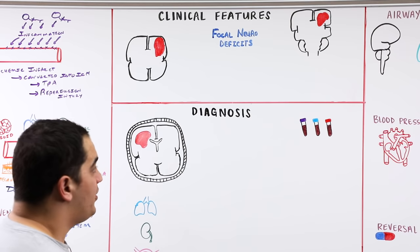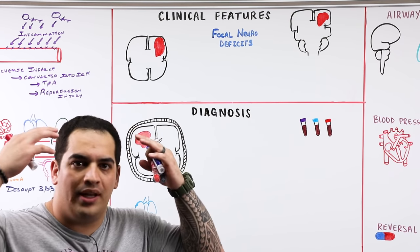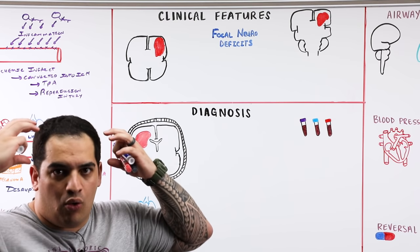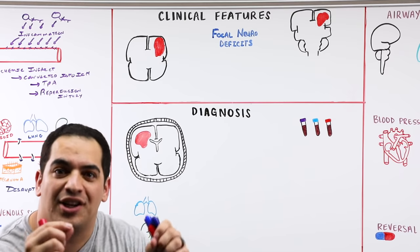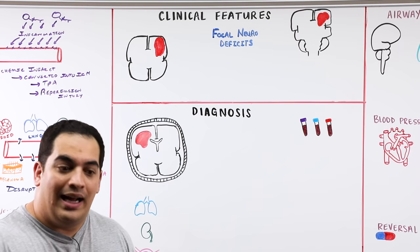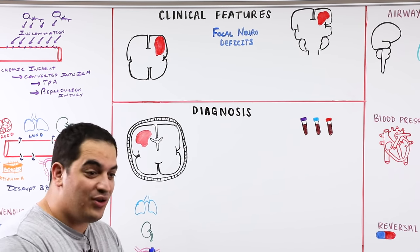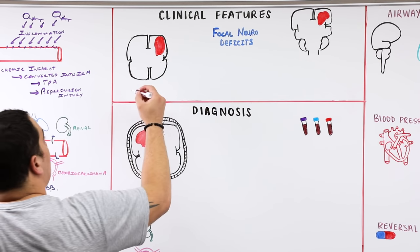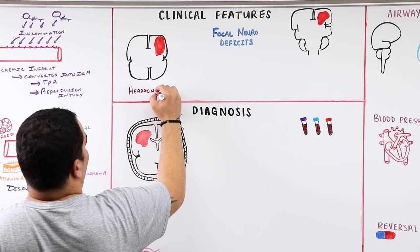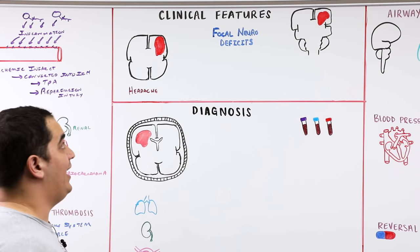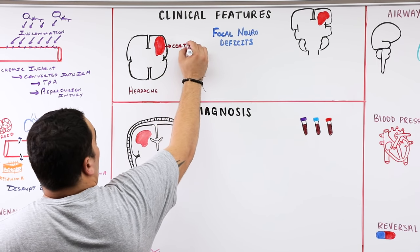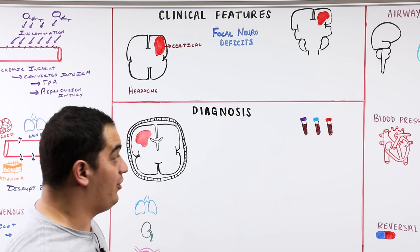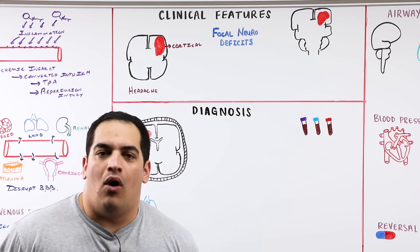Moving on to clinical features: headache is a common symptom, especially with cortical or lobar bleeds, because the bleed is close to the meninges — agitating them and activating sensory fibers of the trigeminal nerve via the trigeminal thalamic tract, causing pain in the head region.